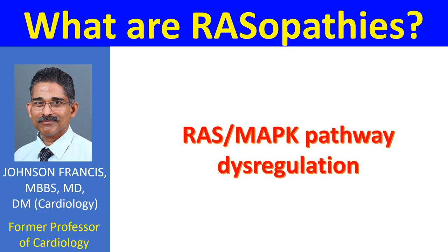Some RASopathies are quite familiar to us by name. Of course, the RAS here has nothing to do with the renin-angiotensin system. Familiar RASopathies include neurofibromatosis type 1, Noonan syndrome, and Noonan syndrome with multiple lentigines — formerly called Leopard syndrome. Other less familiar ones are capillary malformation-arteriovenous malformation syndrome, Costello syndrome, cardiofaciocutaneous syndrome, and Legius syndrome.